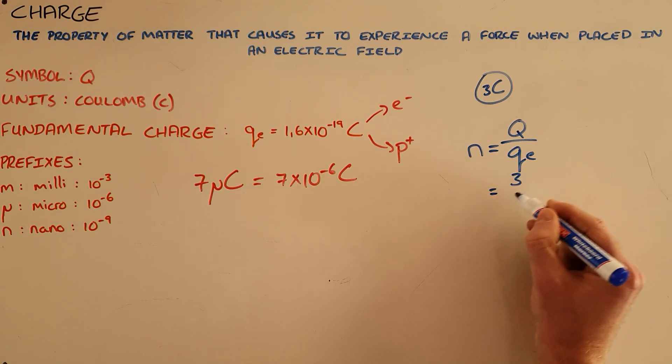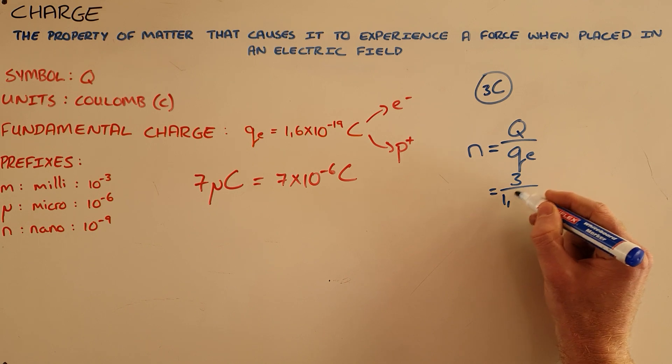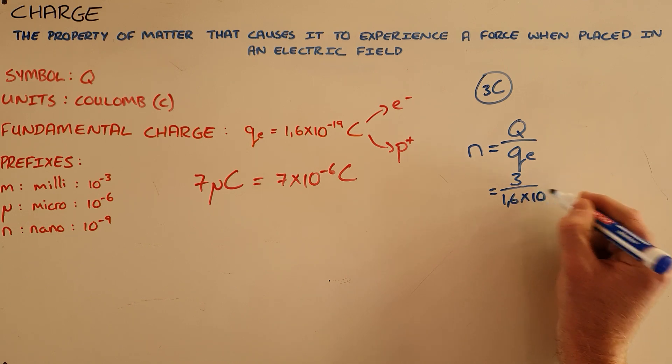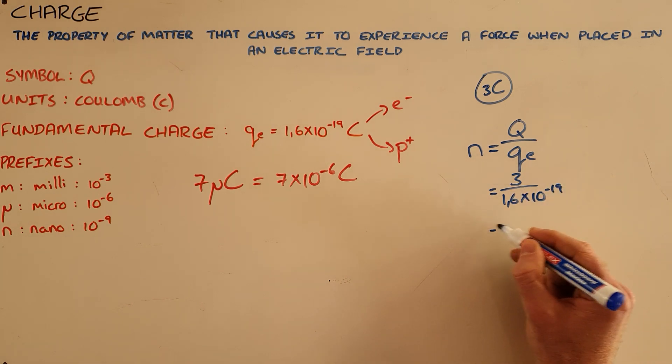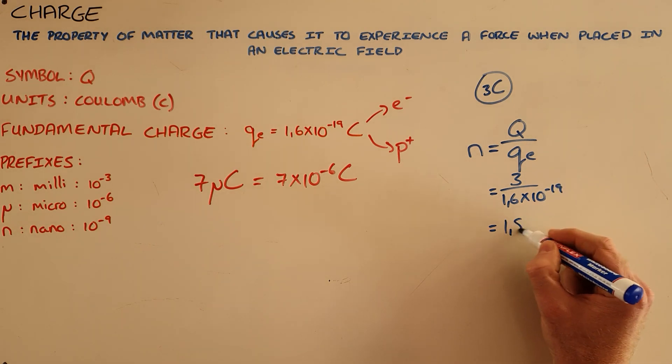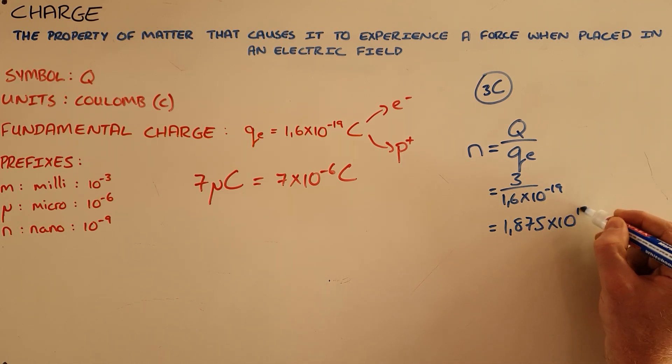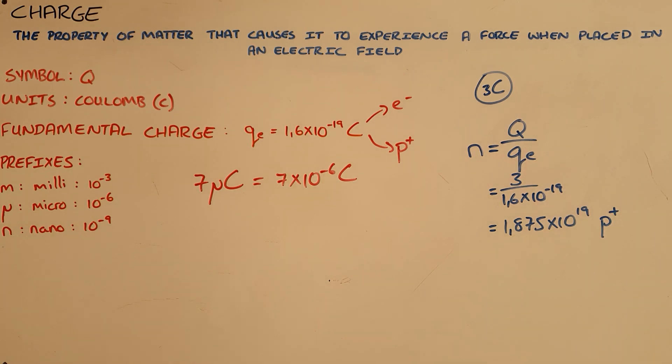Total charge here is given as 3 coulombs. Fundamental charge we know is always 1.6 times 10 to the negative 19. What that tells us is that in a 3 coulomb charge there are 1.875 times 10 to the power of 19 fundamental charges, or in this case, because it's positively charged, protons present.